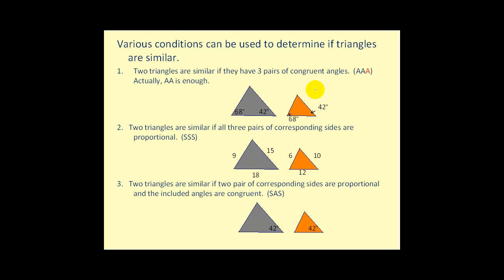There are various conditions that can be used to determine if triangles are similar. Number one, two triangles are similar if they have three pairs of congruent angles, sometimes called AAA, but actually angle-angle is enough. For example, here we have two triangles where two pairs of corresponding angles are congruent. Since the sum of the angles must equal 180 degrees, we can conclude the third angles also equal 70 degrees, guaranteeing the two triangles are similar.